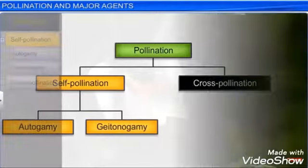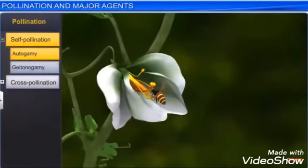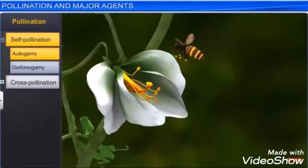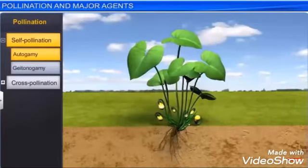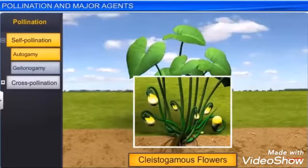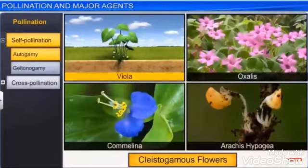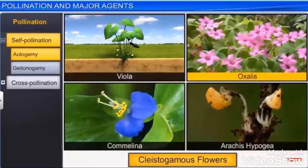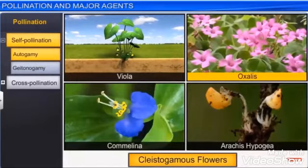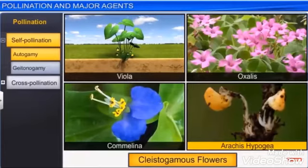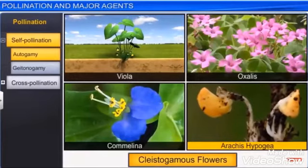In autogamy, the transfer of pollen grain from the anther to the receptive stigma of the same flower is called autogamous pollination. It always occurs in bisexual flowers, and these flowers often remain closed so that only self-pollination takes place.